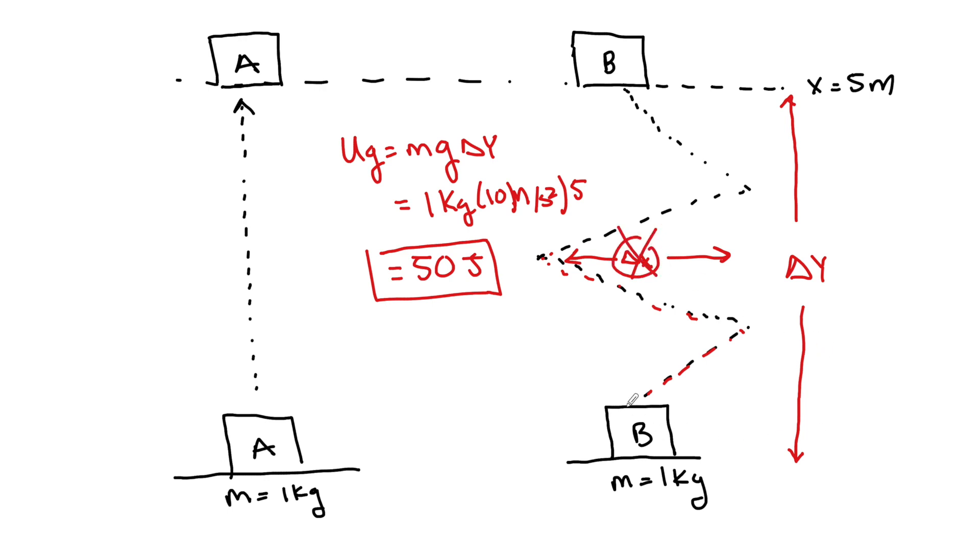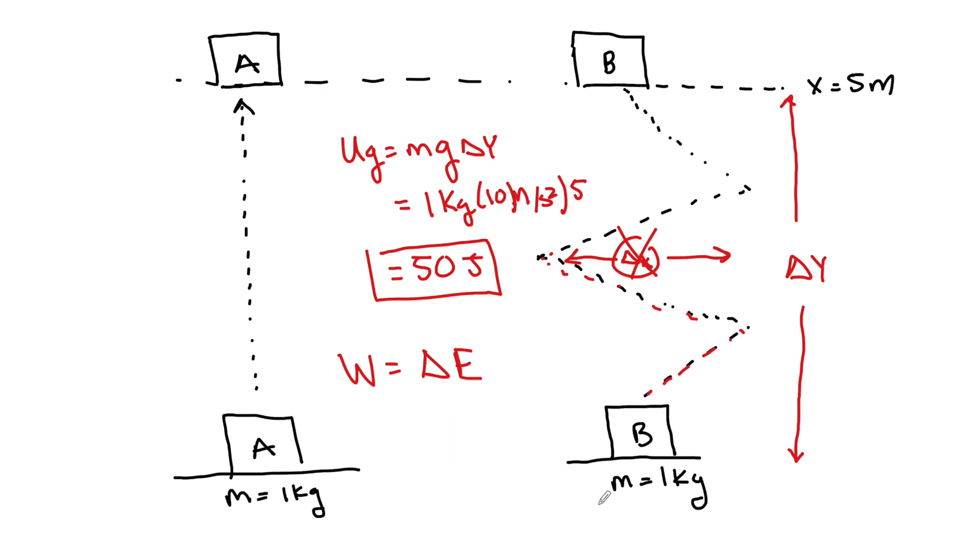All right, so we're going to use gravitational potential energy with kinetic energy to help solve for the work done as we continue on with this work equals delta energy. So now we have kinetic energy, and we have kinetic and potential energy. There's going to be one more energy that we need to learn, which would be on the next video, guys. Have a great day.